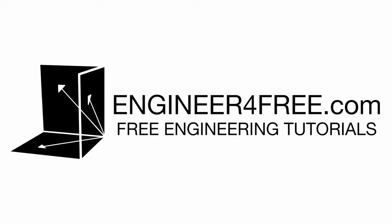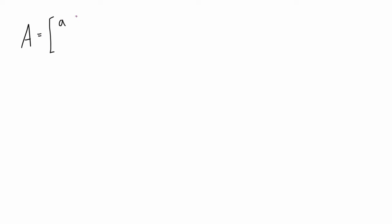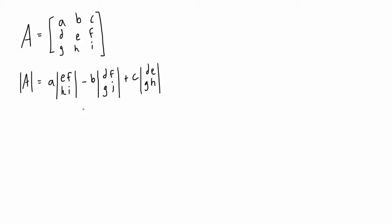Welcome back. In this video we are finding the determinant of a 3×3 matrix using cofactor expansion. We have matrix A here that's 3×3. When we want to find the determinant using cofactor expansion, we pick one row — it can be any row or any column — and expand out the formula. Applying it to the first row: we have a, b, c from the first row, and it alternates positive, negative, positive.